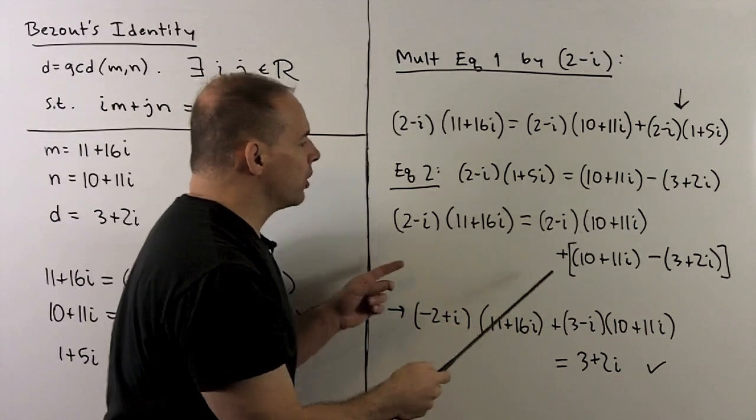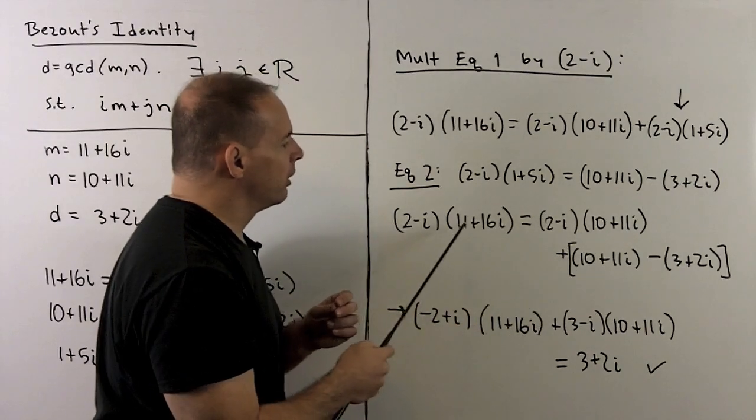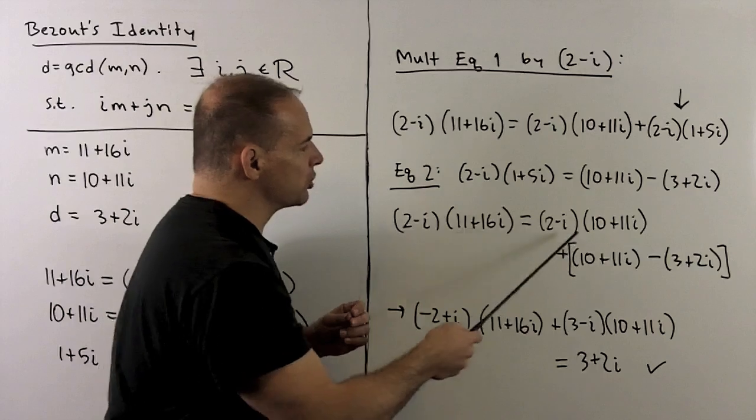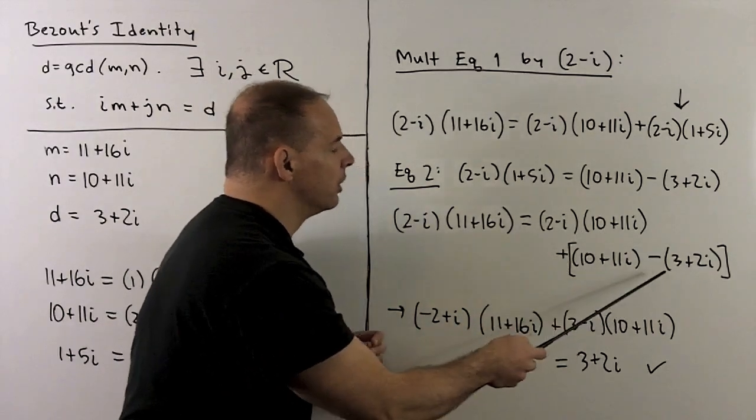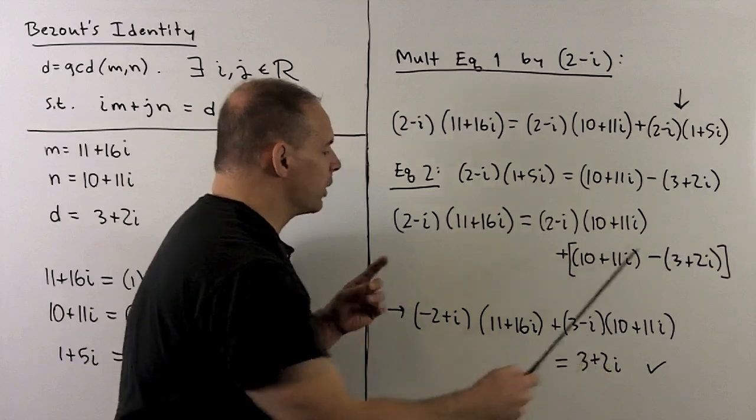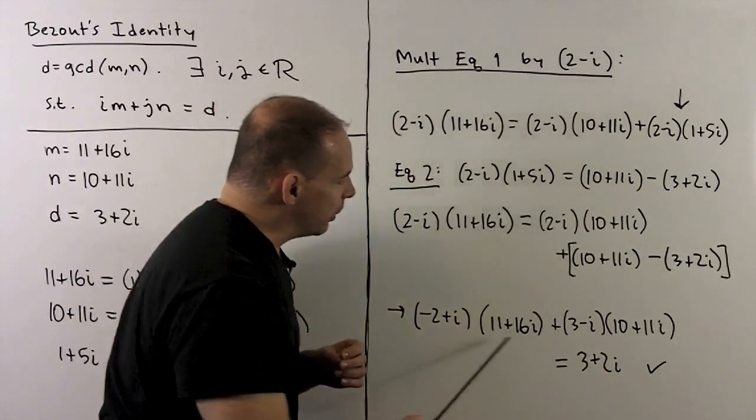When I do that, the resulting equation is completely in terms of our two integers that we're starting with, m and n, and we have our d. So when we simplify this, what comes out? We have this equation here.